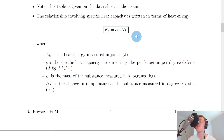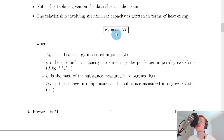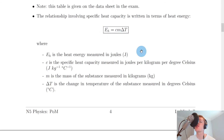From this relationship we can identify a few important things. EH and c are directly proportional to each other if we ignore mass and change in temperature. This means the higher the specific heat capacity c, the greater the heat energy stored; and the smaller the specific heat capacity c, the smaller the heat energy stored.